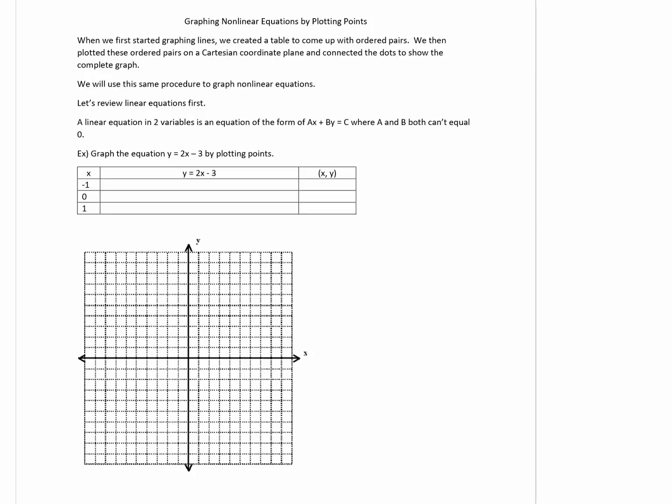The example I have is y = 2x - 3. Let's choose x equal to negative 1, 0, and 1, and substitute those x values. When I substitute in negative 1, I get 2 times negative 1 minus 3, that's negative 2 minus 3, so that's negative 5. The ordered pair is (-1, -5). Plugging in 0, I get 0 minus 3, that's negative 3, so the ordered pair is (0, -3). When I plug in x = 1, that's 2 times 1, that's 2 minus 3 is negative 1, so the ordered pair is (1, -1).